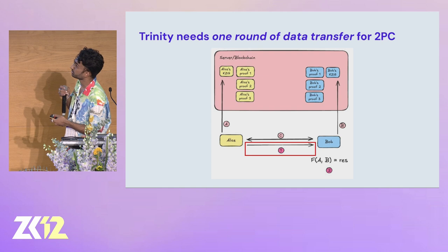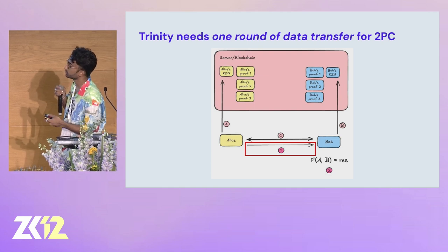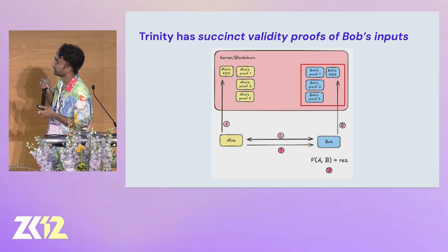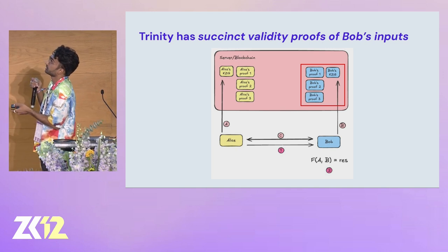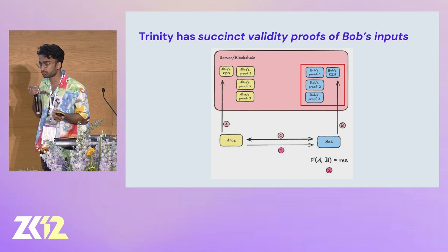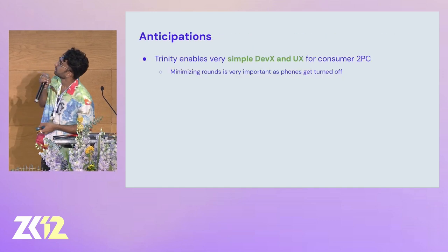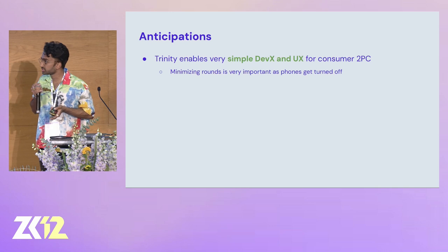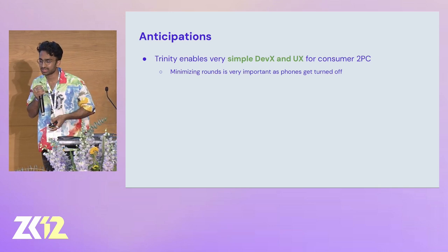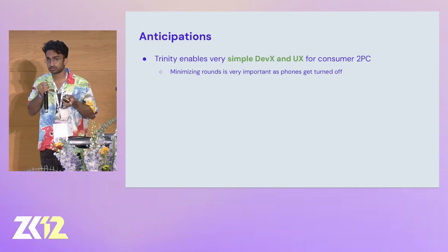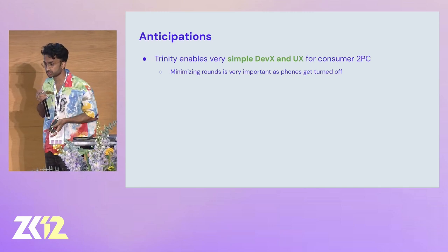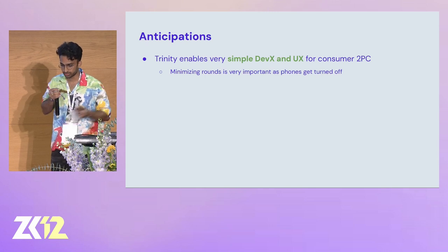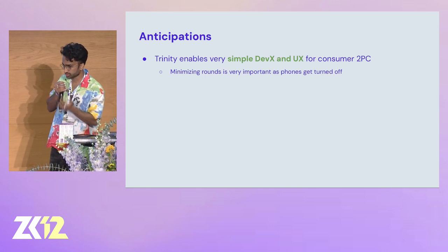Altogether, Trinity enables one round of data transfer to do a 2PC, which in consumer settings is super useful because people put their phones away. In addition, you get validity proofs of your data for very cheap and also very small proofs — small enough where you can feasibly put them on a blockchain. The upshots are that Trinity — we're still working on implementing it, should be up in a few weeks at Edge City and DevCon. We think Trinity will enable a really simple developer experience and user experience for building and using a consumer 2PC, because when you don't have to think about all these rounds of computation, that's a huge load taken off both the developer and the user.